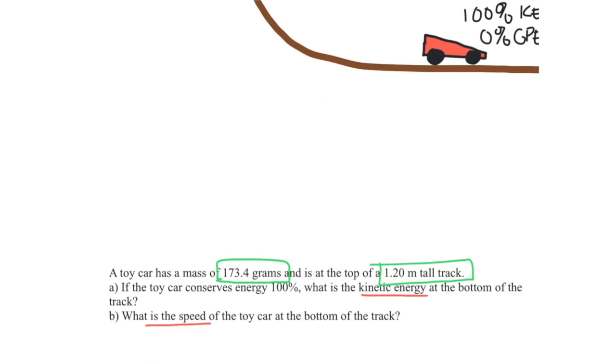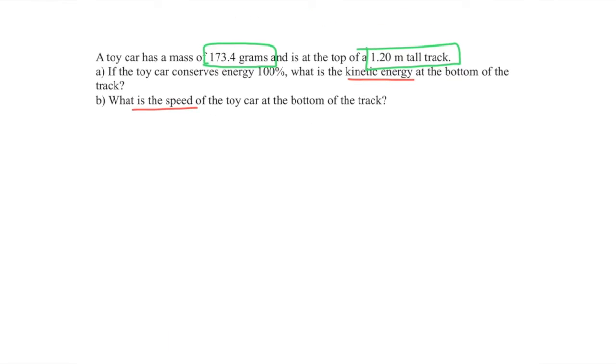Now we can solve our problem. The first thing we're going to do for part a is find what the potential energy is at the top of the track, because we're going to assume that it all converts to kinetic energy at the bottom.